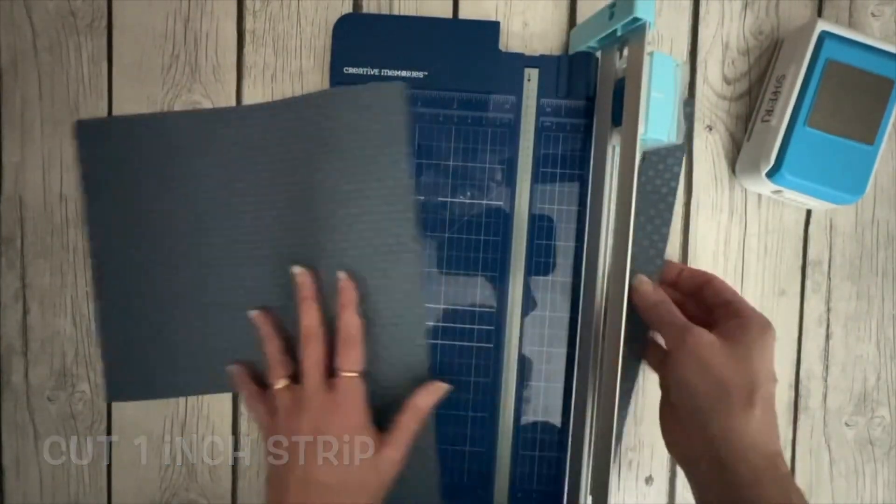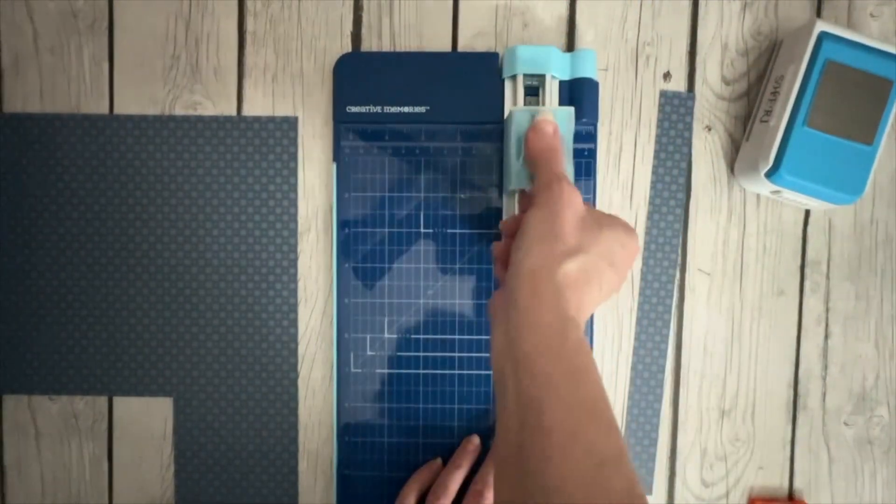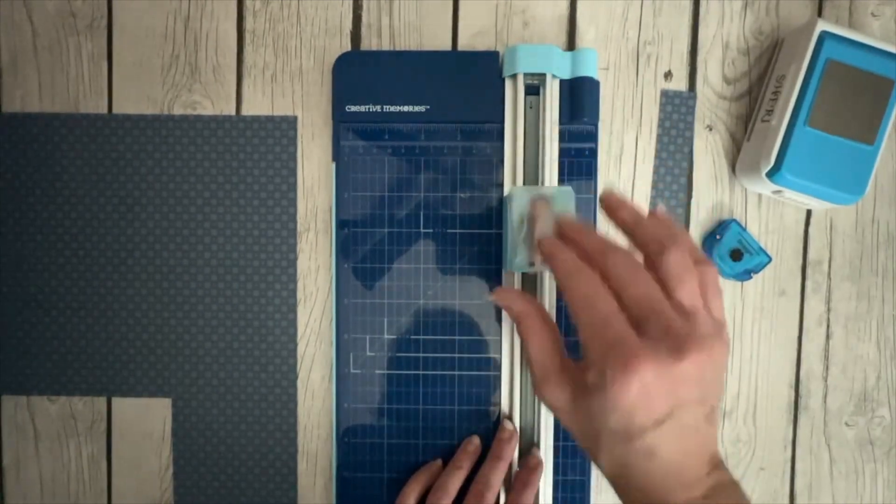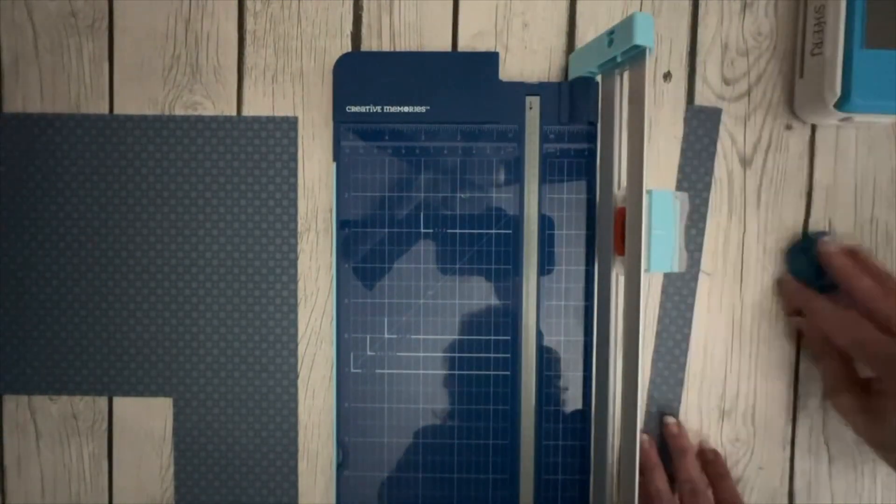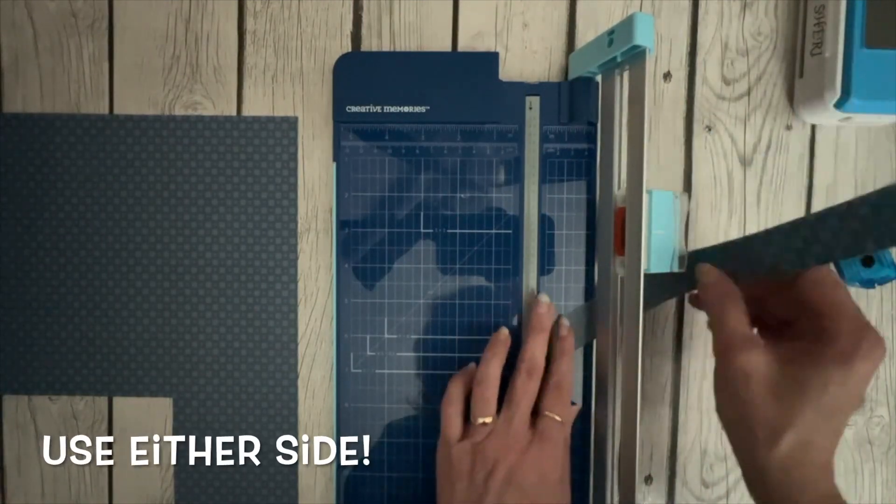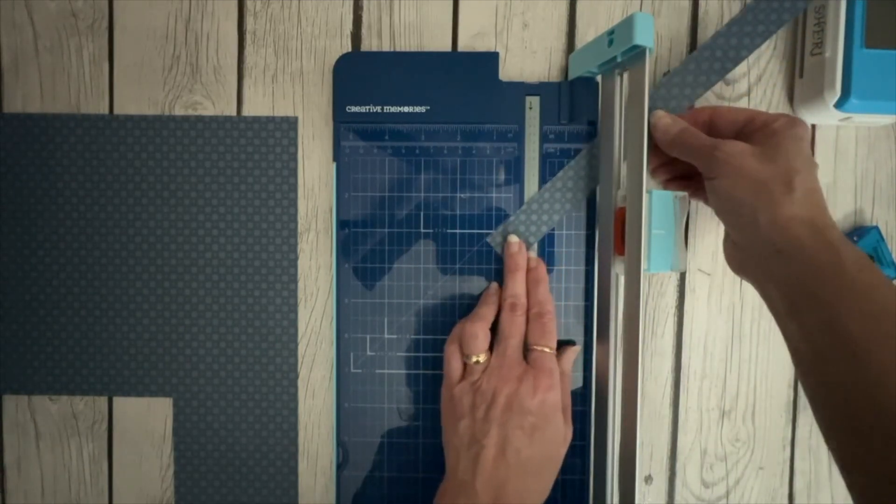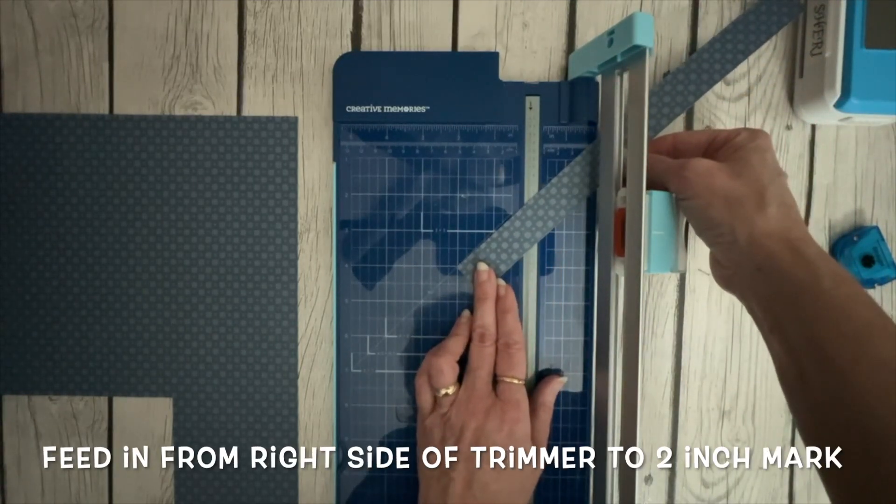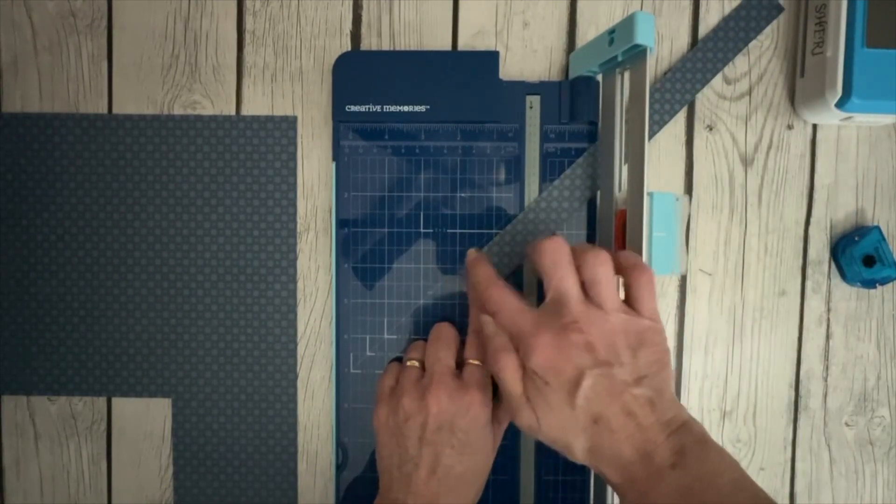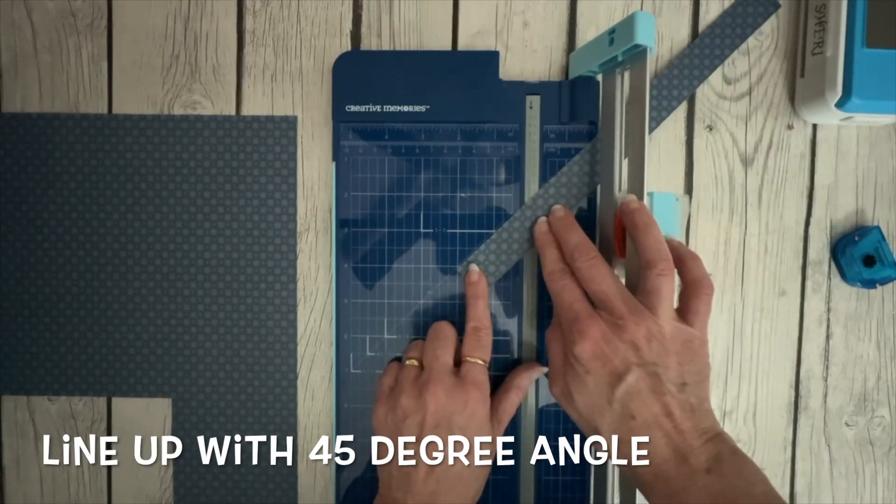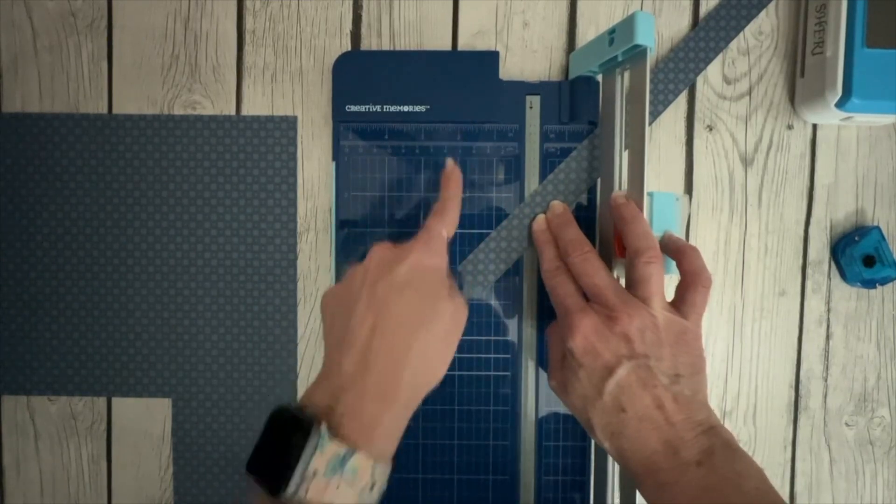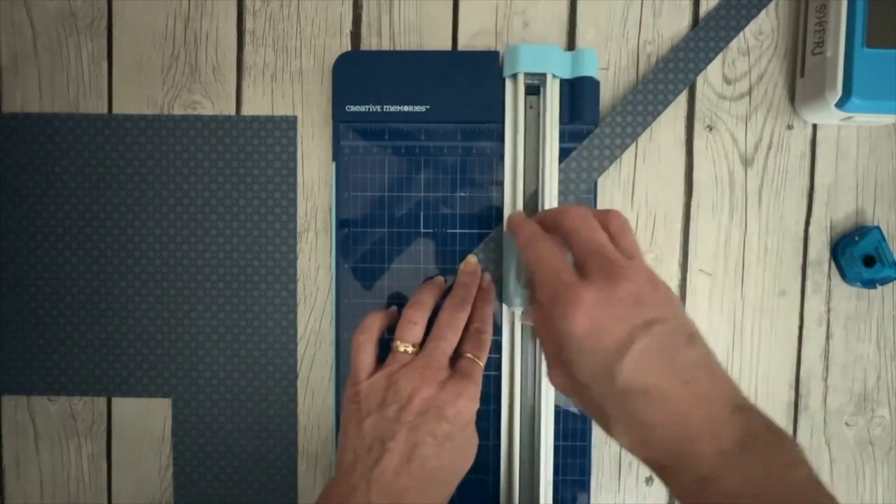Now when I've got that one inch strip I need to switch out my blade to my scoring blade. You just pop the top open, slide in that scoring blade and close. I'm going to take this paper and feed it in from the right side of the trimmer. I'm going to slide it down to the two inch mark on this left side of the trimmer. I'm also lining up along this 45 degree angle that is on my trimmer. So lining up on the 45 degree, lining up to the two inch mark and I'm going to score that.